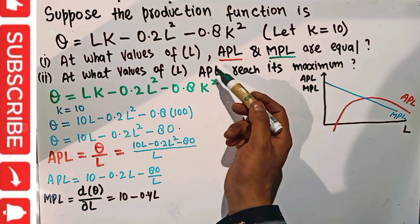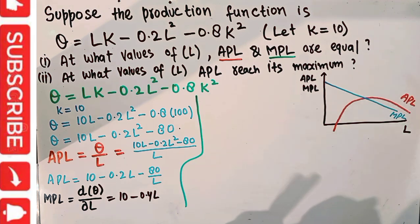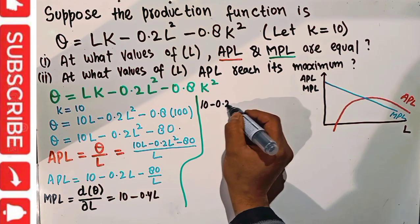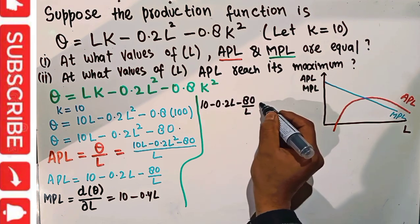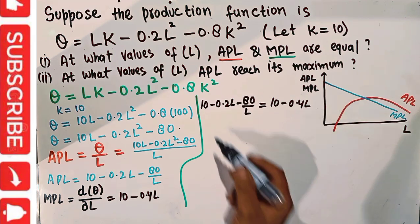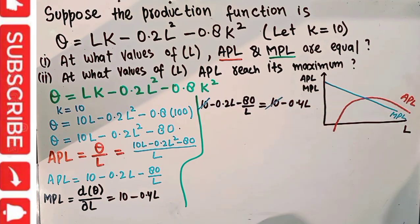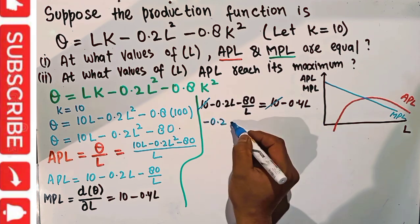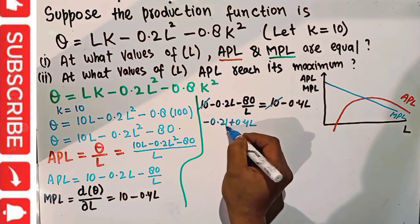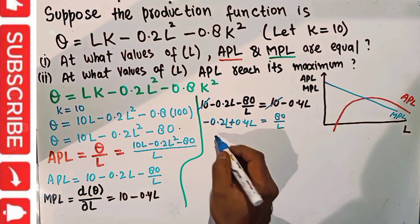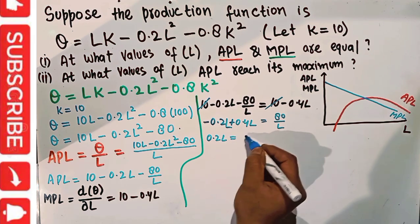We are asked at what value of L APL and MPL are equal. We equate them: 10 − 0.2L − 80/L = 10 − 0.4L. Cancelling 10 from both sides, and transposing −0.4L to the left-hand side, we get 0.2L + 0.4L = 80/L, which gives 0.2L = 80/L.